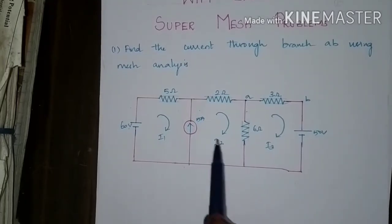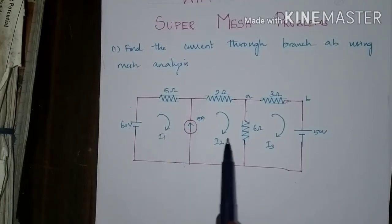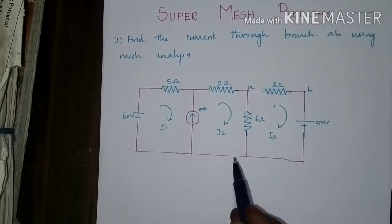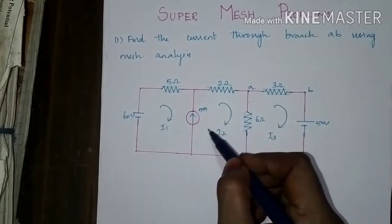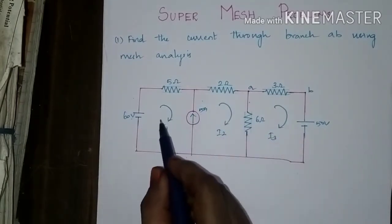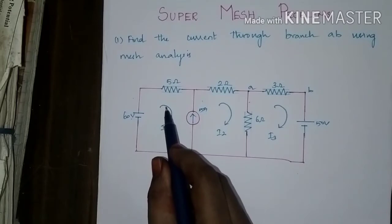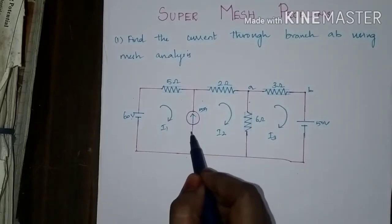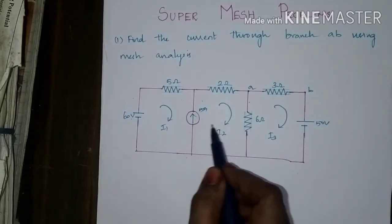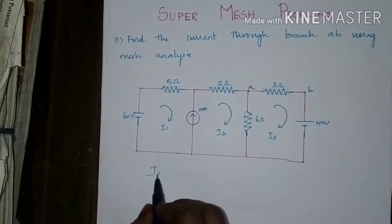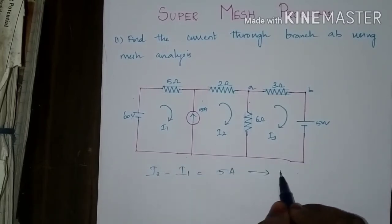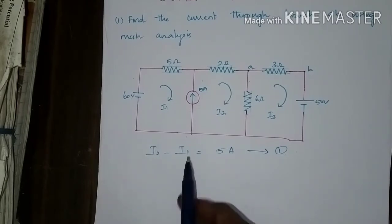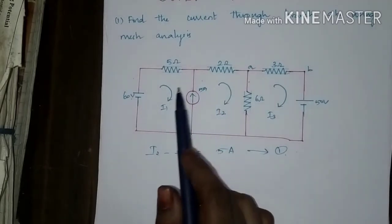The current source contains those two mesh currents. If you see I2, the current is increasing from bottom to top, and I1 is decreasing from top to bottom. So I2 minus I1 is equal to 5 amperes. Take this as equation 1. Now you can remove this current source.